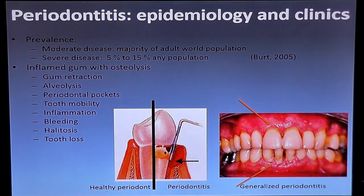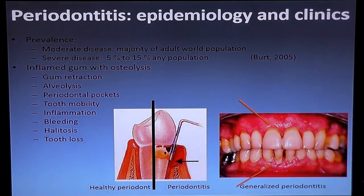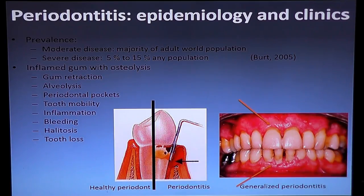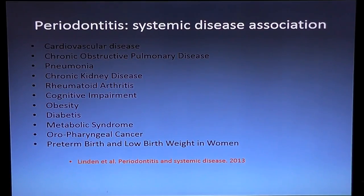Most patients and dentists know about periodontal disease. It does cause a problem for the majority of the adult world population — at least half the population has this disease, and sometimes it's severe — five to fifteen percent of any population. What you find will be gum retraction, alveolosis, periodontal pockets when you measure the gum, tooth mobility, inflammation, bleeding, halitosis, and tooth loss. So it does touch many patients.